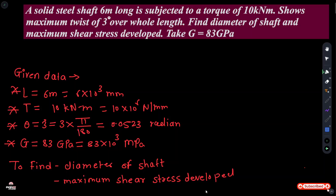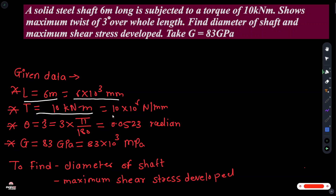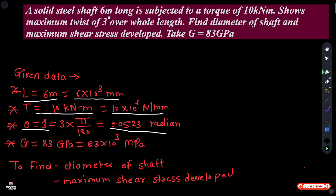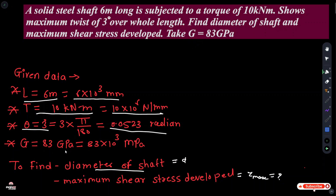A solid steel shaft 6 meters long is subjected to a torque of 10 kilonewton-meters. So L is equal to 6 meters, converted to 6 into 10 raised to 3 mm. T is equal to 10 kN·m, converted to newton per mm. Maximum twist theta is equal to 3 degrees, converted to radians. Find the diameter of the shaft and maximum shear stress developed. Take modulus of rigidity G equal to 83 GPa, converted to 83 into 10 raised to 3 MPa.